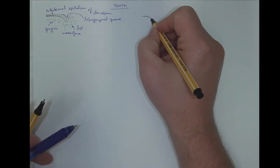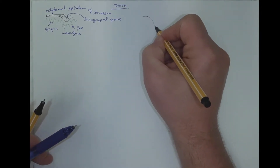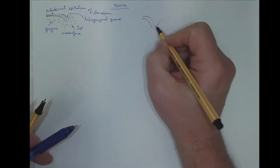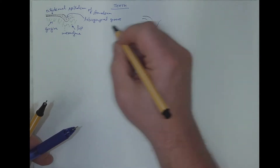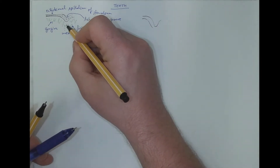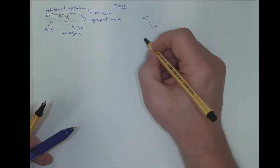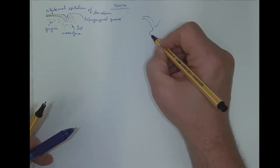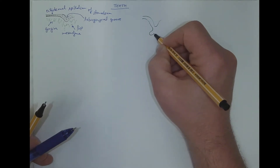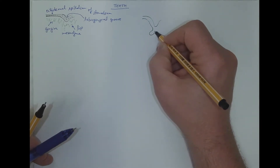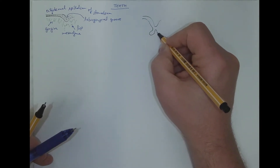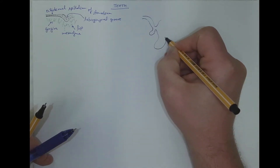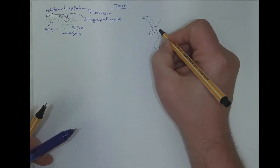The epithelium will invaginate further, forming the primordium of the dentition — of the second dentition and the first dentition, which is larger.